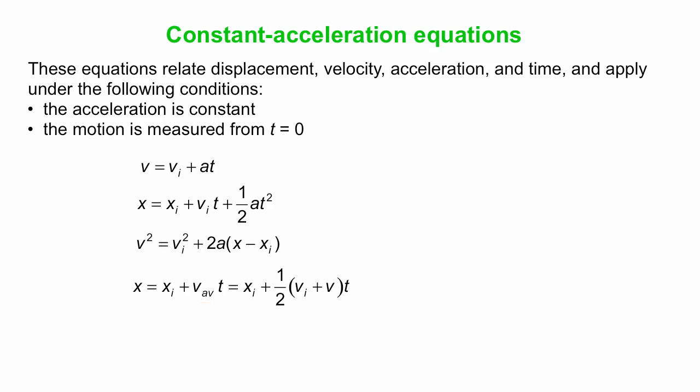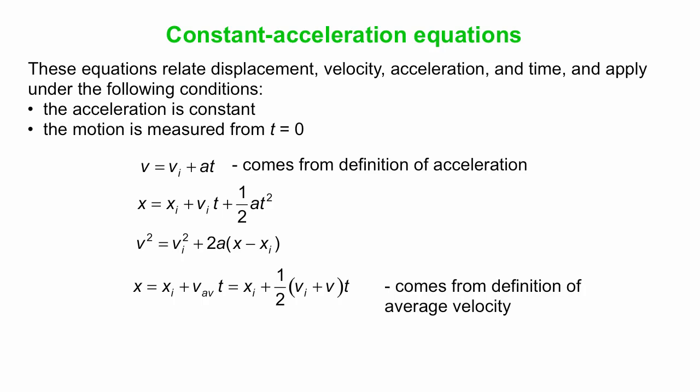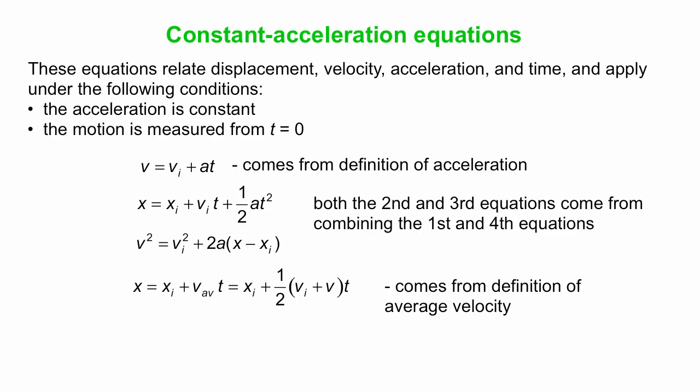So where do these equations come from? The first one comes from the definition of acceleration. The last one comes from the definition of average velocity. The other two come from combining the first and the fourth. For instance, if you take v equals vi plus at and replace the v in the last equation by vi plus at, you will get the second equation. And if you solve for time in the first equation and plug that expression for time into the last one, you will get the third equation.